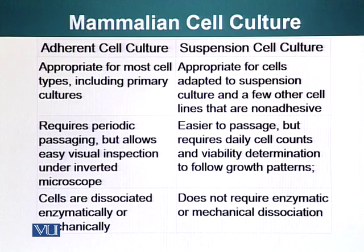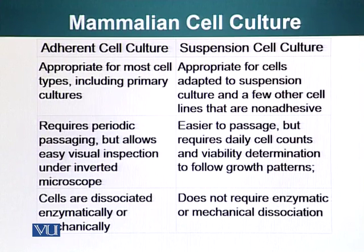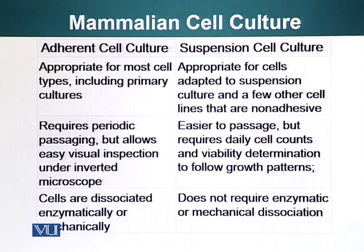Broadly, we can divide cell cultures into two groups: adherent cell culture or suspension cell culture. Adherent cell culture is appropriate for most cell types, including primary cultures. Suspension cultures are cells that do not stick to a substrate or the bottom of the dish — they stay suspended in the media. These are generally blood cells or bone marrow cells. Adherent cells require periodic passaging but allow easy visualization under an inverted microscope. Suspension cells are also passaged, but since they are suspended, it is harder to observe them under an inverted microscope.